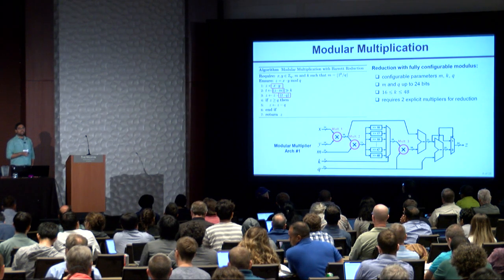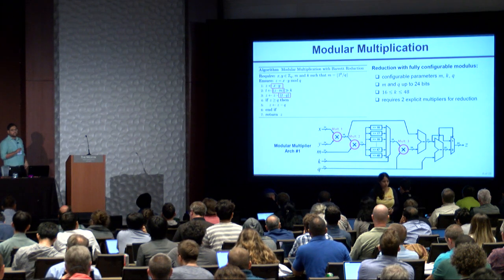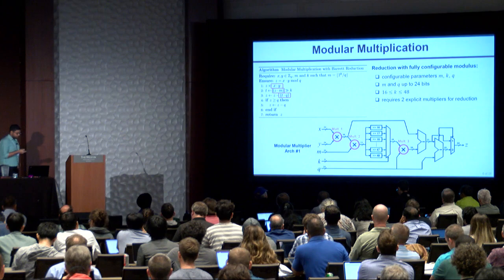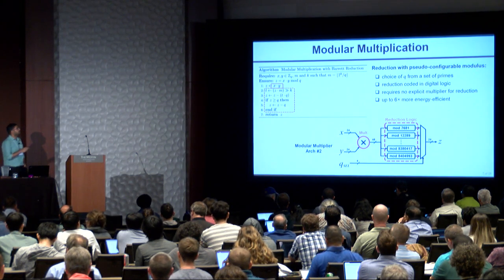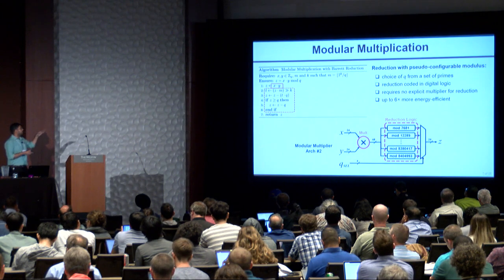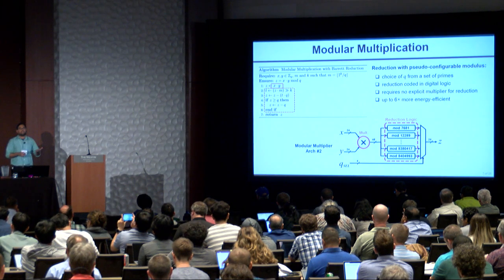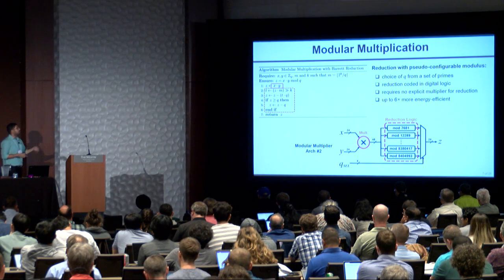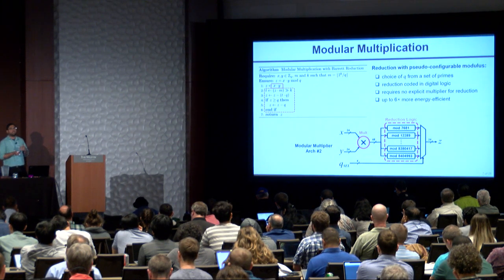The first multiplier architecture has a fully configurable prime modulus, meaning all the Barrett reduction parameters like M, K, and Q can be configured freely. Because it is configurable, we need two more multipliers to do the reduction process. The second architecture is not as flexible — we call it reduction with pseudo-configurable modulus — where we choose the prime Q from a set of commonly used primes and the rest is hard-coded in digital logic. We lose some flexibility, but we can exploit the special structure of the primes to make modular reduction more efficient. From simulation and measurement results, this modular reduction is around six times more energy efficient than the previous one, and the overall modular multiplication is around three times more efficient.